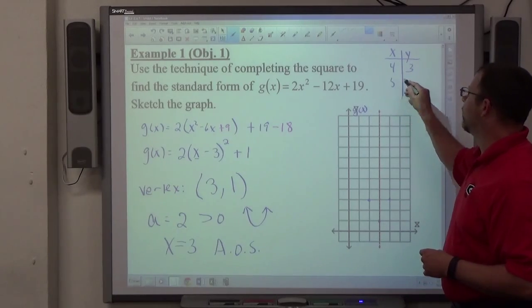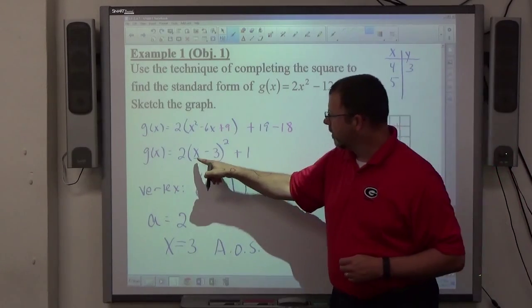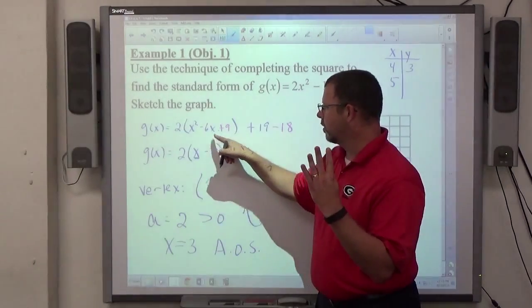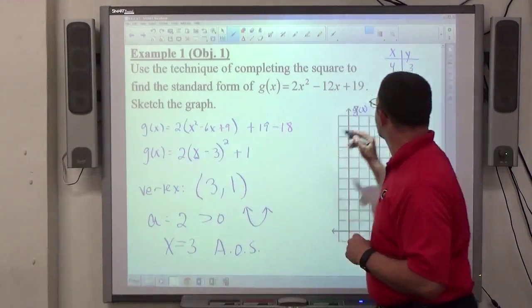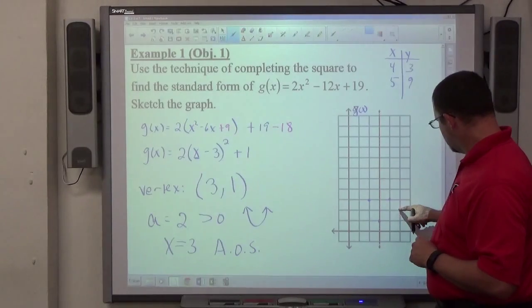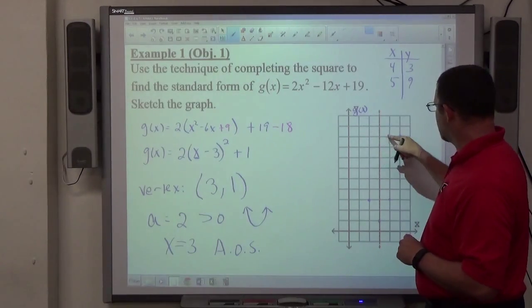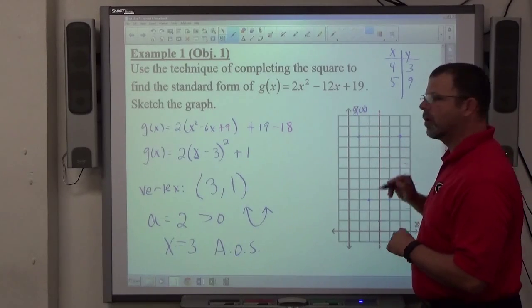If I wanted another point, let's say I want a 5. Let's do that here. If I put 5 right here, 5 minus 3 is 2. 2 squared is 4. 4 times 2 is 8. 8 plus 1 is 9. 1, 2, 3, 4, 5, 6, 7, 8, 9. Two spaces away is 9. So two spaces away, the other direction is also 9.